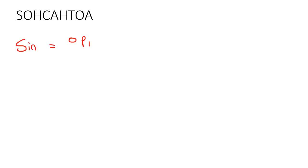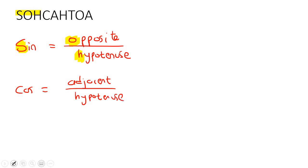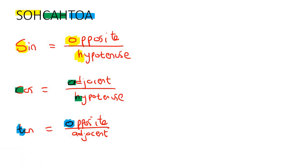Let's quickly remind ourselves what SOH-CAH-TOA means. Sin is equal to the opposite over the hypotenuse — that's SOH. Cos is equal to adjacent over hypotenuse — that's CAH. And tan is equal to the opposite over the adjacent — that's TOA. Make sure you have all of that written down.